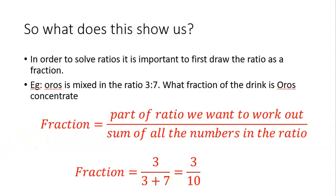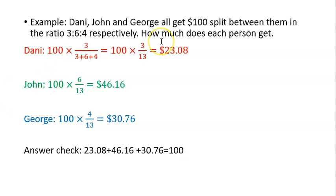Now let's do a slightly more difficult example. Danny, John, and George all get $100 split between them in the ratio 3:6:4 respectively. How much does each person get?